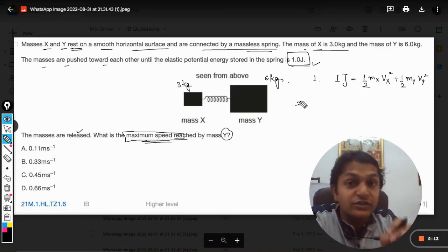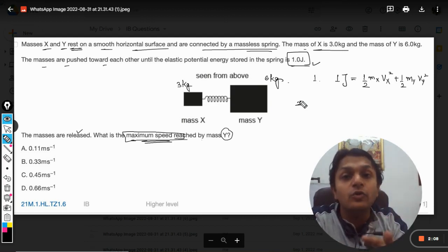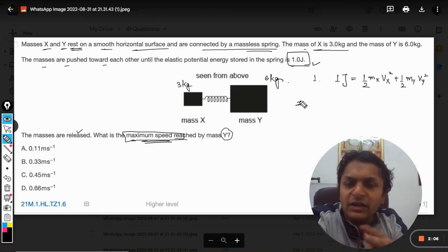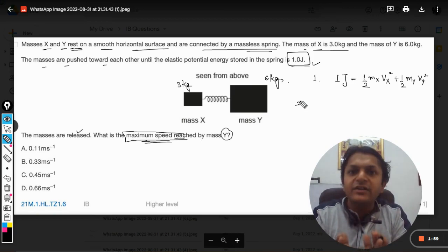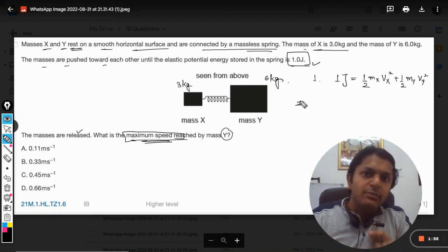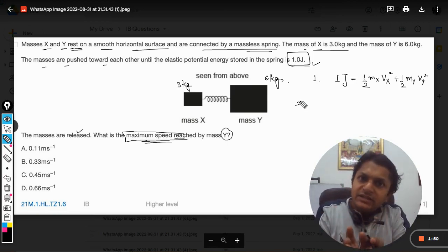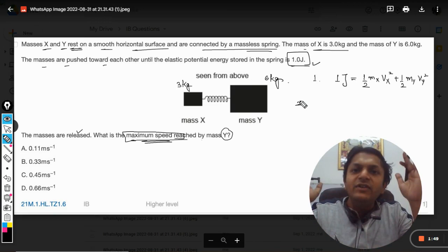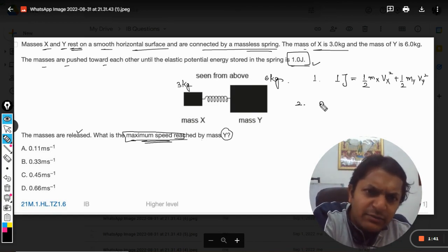Now the second equation: momentum is conserved for the system and this spring is massless. So where are the masses? Masses are only with mass X and mass Y. Earlier the masses were at rest when we compressed the spring. So what is the total momentum at time zero? Because V1 and V2 both velocities are zero, so the momentum is zero. But when we release them, both masses attain some velocity.